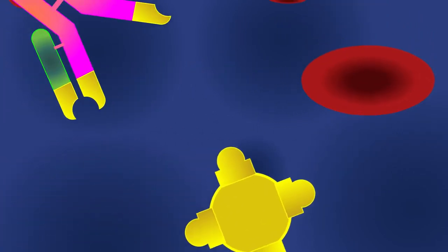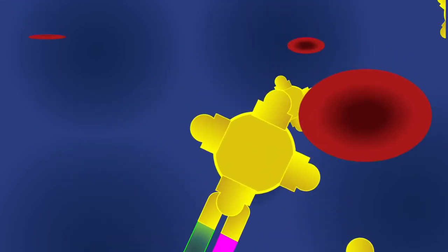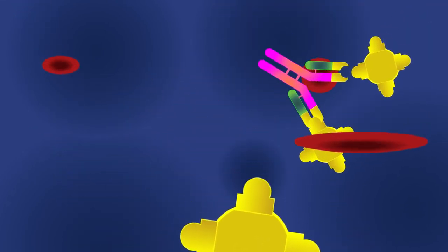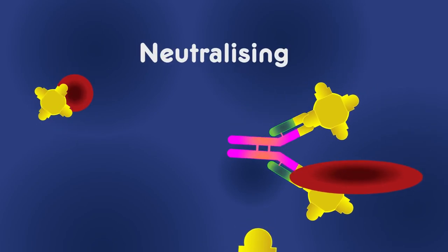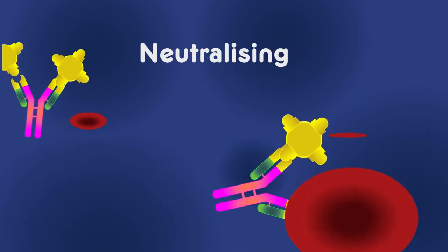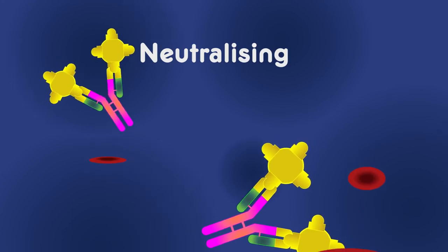By binding to an antigen, an antibody can stop the antigen from entering or damaging cells. This is known as neutralizing. The antibody can also tag the antigen for attack by other parts of the immune system.